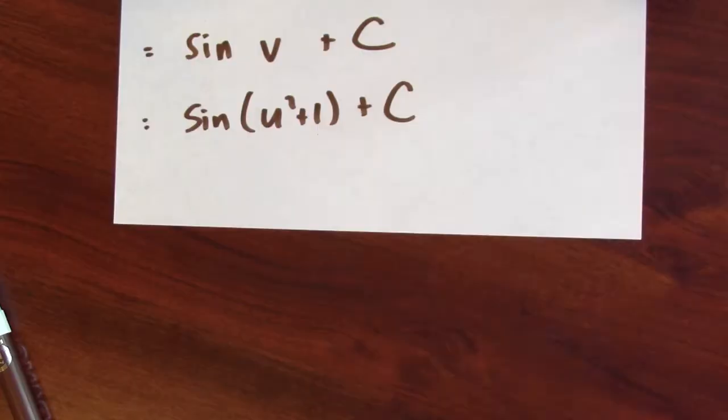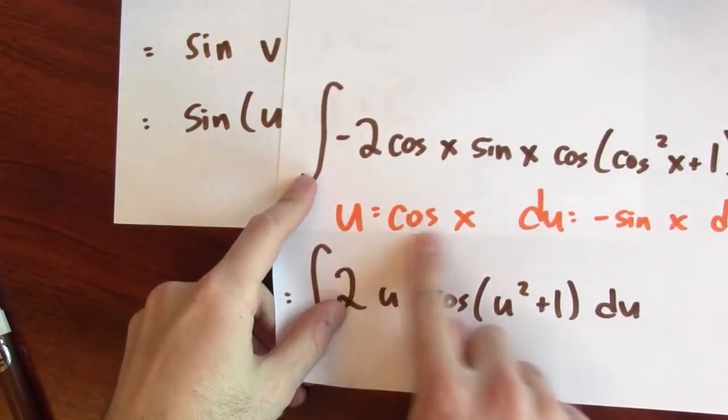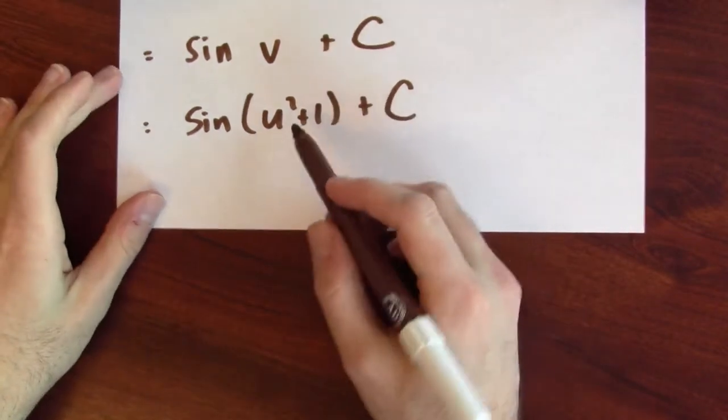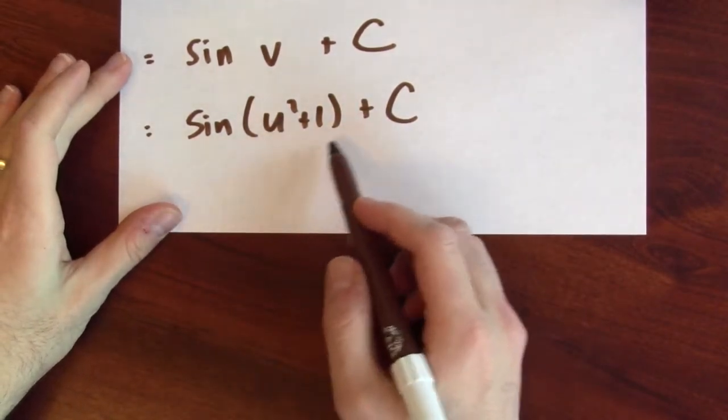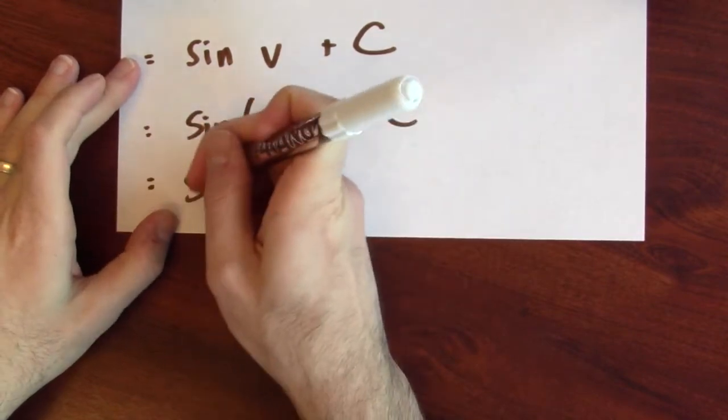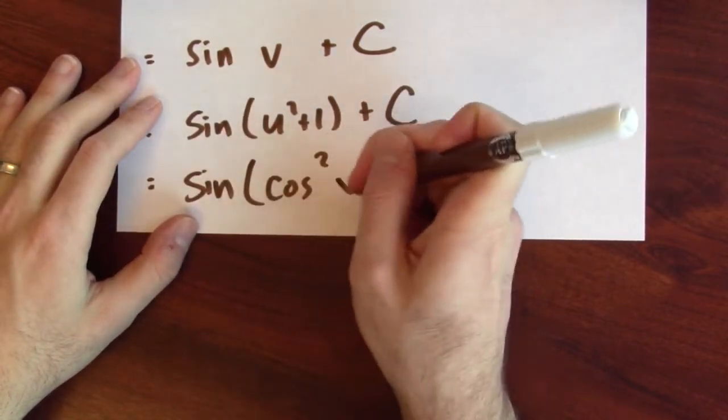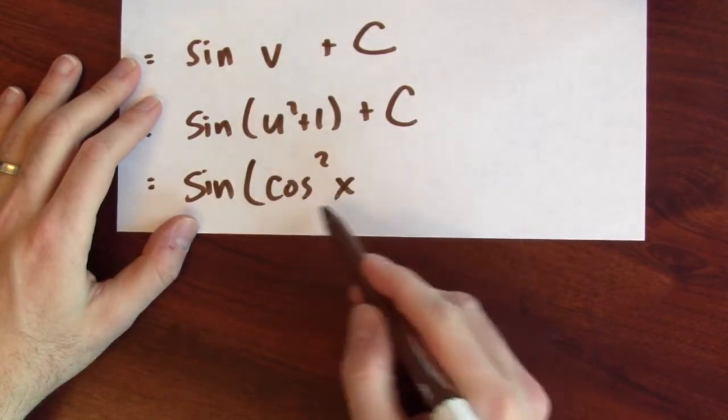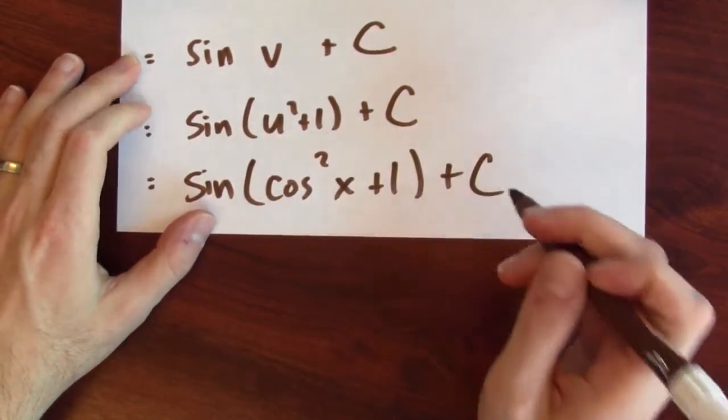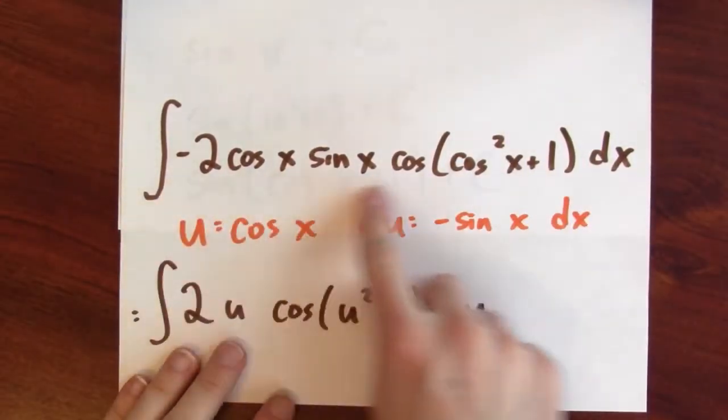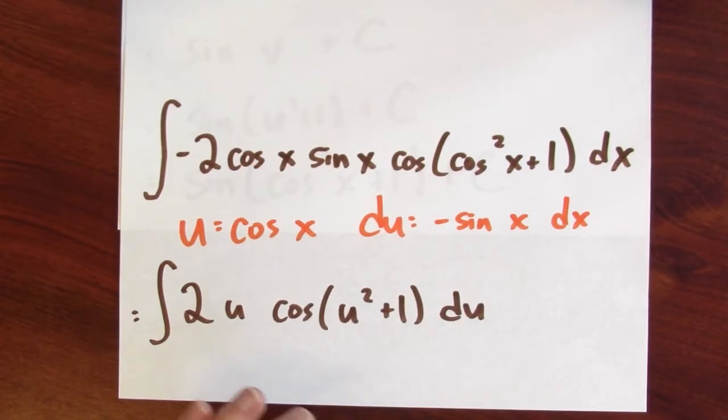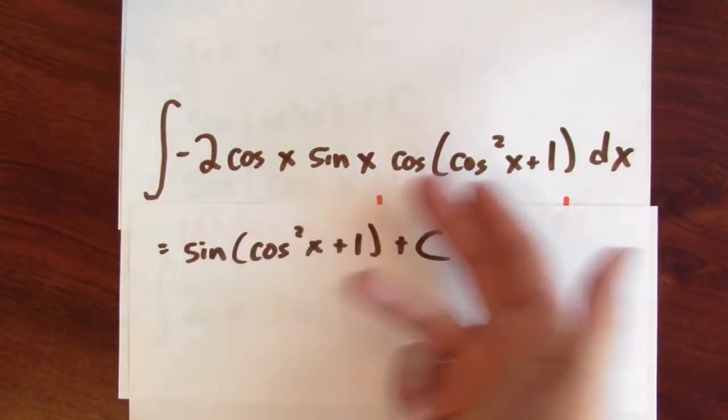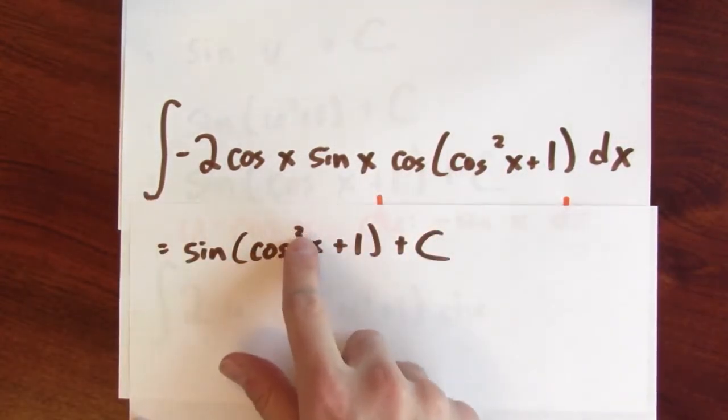My answer is in terms of u, but the original question was in terms of x. So remember what u was. U was cosine x. I can make that final substitution back in here. Instead of writing sine of u squared plus 1, I'll write down sine of cosine squared x, because u is cosine x, plus 1 plus c. So what I'm claiming is the original question was asking for an anti-derivative of this crazy expression, and what I'm claiming is that the anti-derivative of this is sine of cosine squared x plus 1 plus c. So we did it.